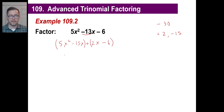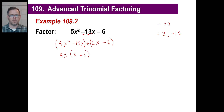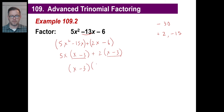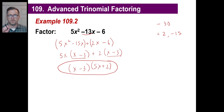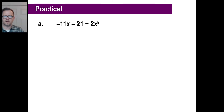Both groups share x minus 3, so we combine the outer terms: 5x plus 2 and x minus 3. The answer is (x − 3)(5x + 2). It doesn't matter which binomial you write first — multiplication is commutative. If your answer looks different from the book's, just make sure you have the same two binomial factors.